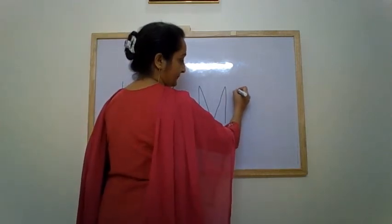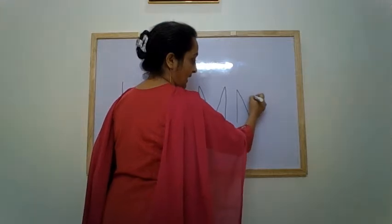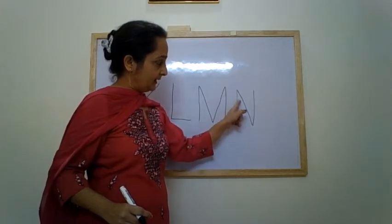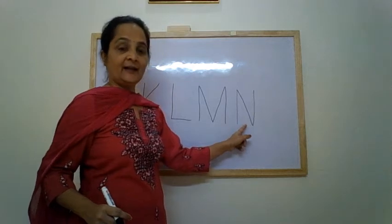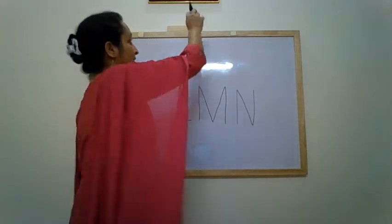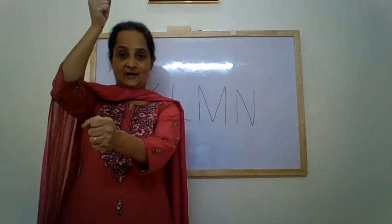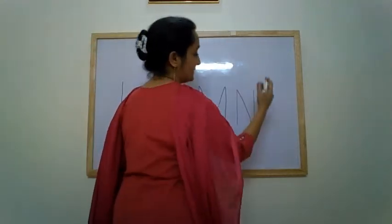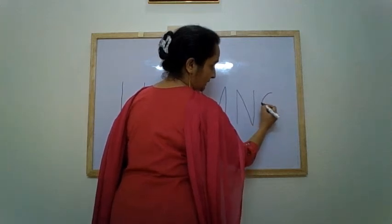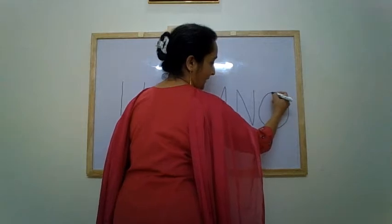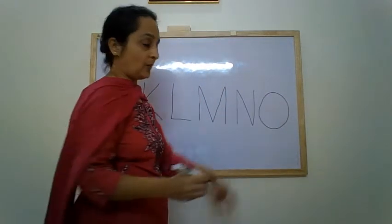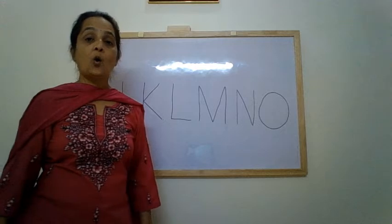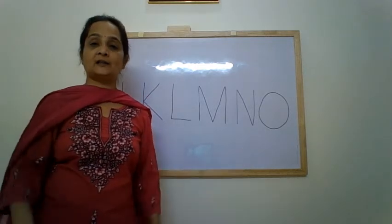Next is N: go up, come down, go up — letter N. N makes the sound N. Next is O: start from the top, go down, turn, come up again — letter O. O makes the sound A.